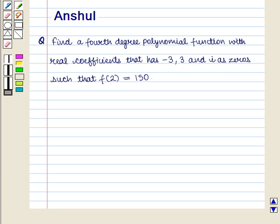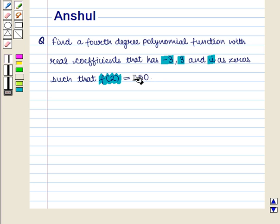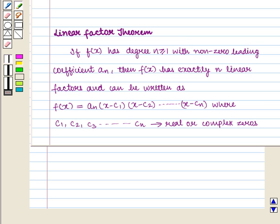Hello and welcome to the session. In this session we are going to discuss the following question: Find a fourth degree polynomial function with real coefficients that has minus 3, 3, and iota as zeros such that f of 2 is equal to 150.